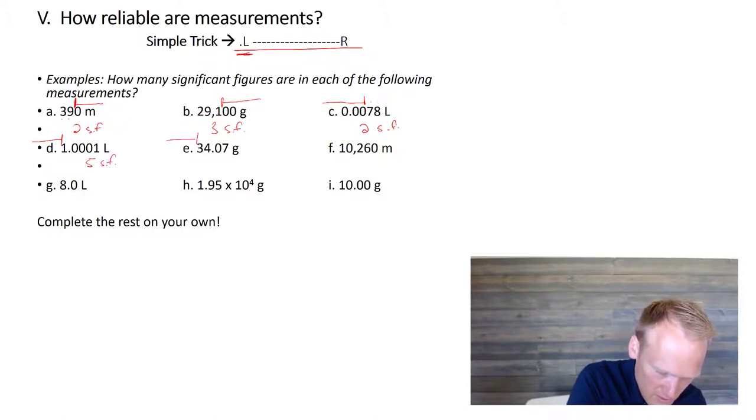Once again, there's a decimal there, so 1, 2, 3, 4 sig figs. You'll get better. This is a trailing zero, and there's no decimal, so I'm going to start here. 1, 2, 3, 4, 4 sig figs. This scientific notation, we're going to ignore this, and we're going to go 1, 2, 3, 3 sig figs. Okay?